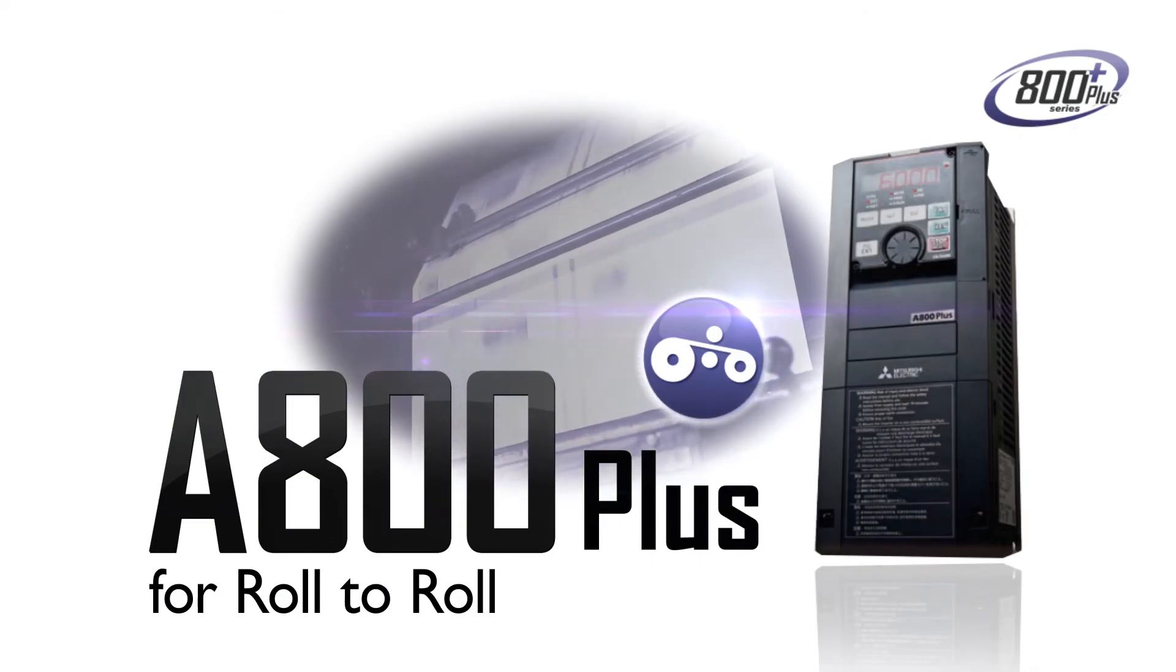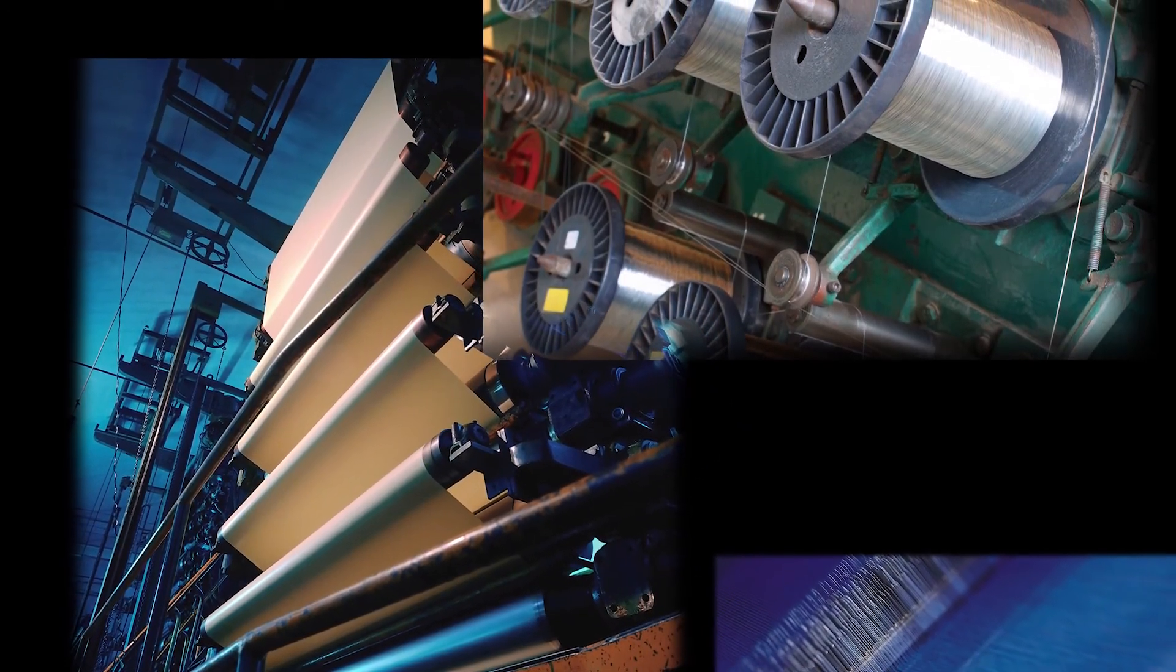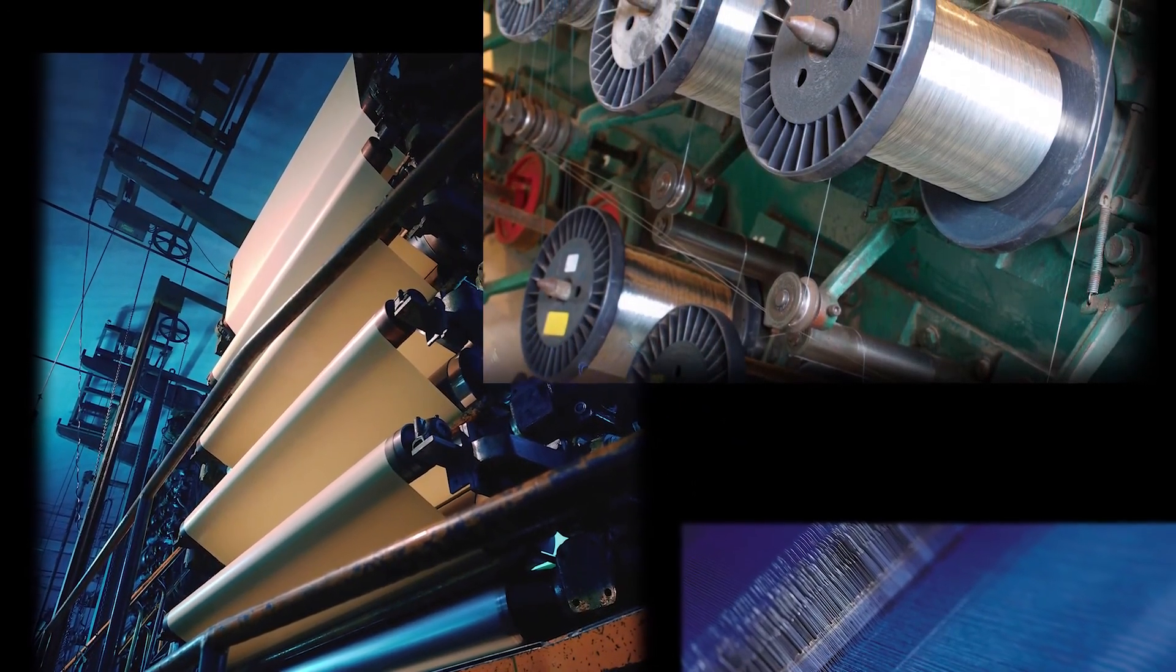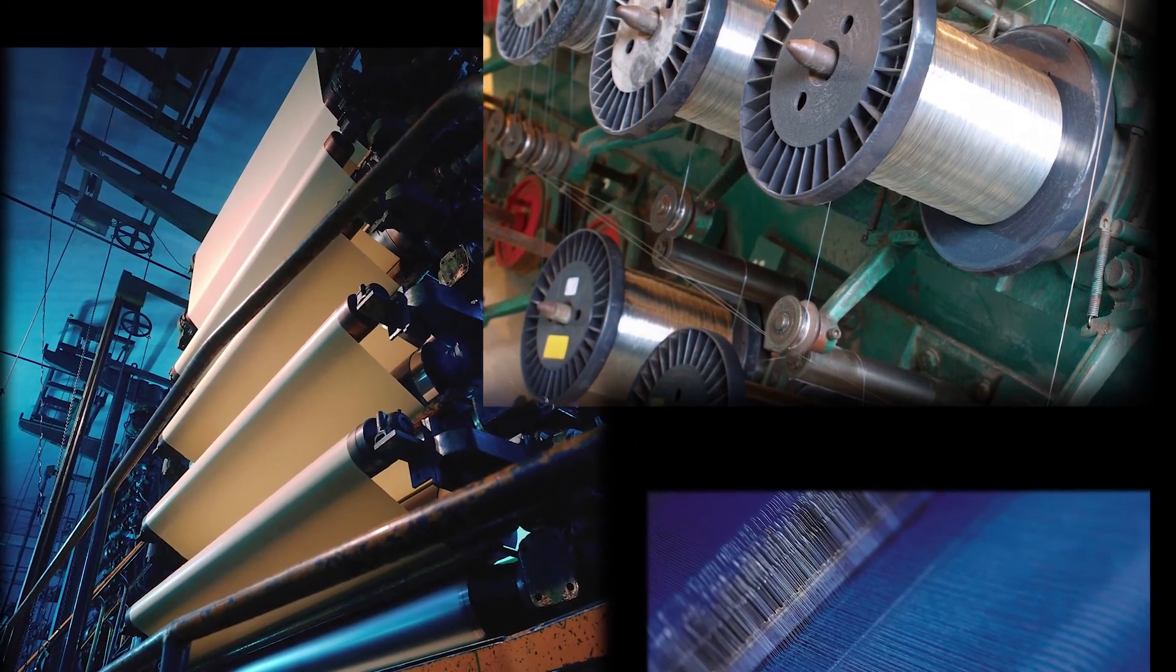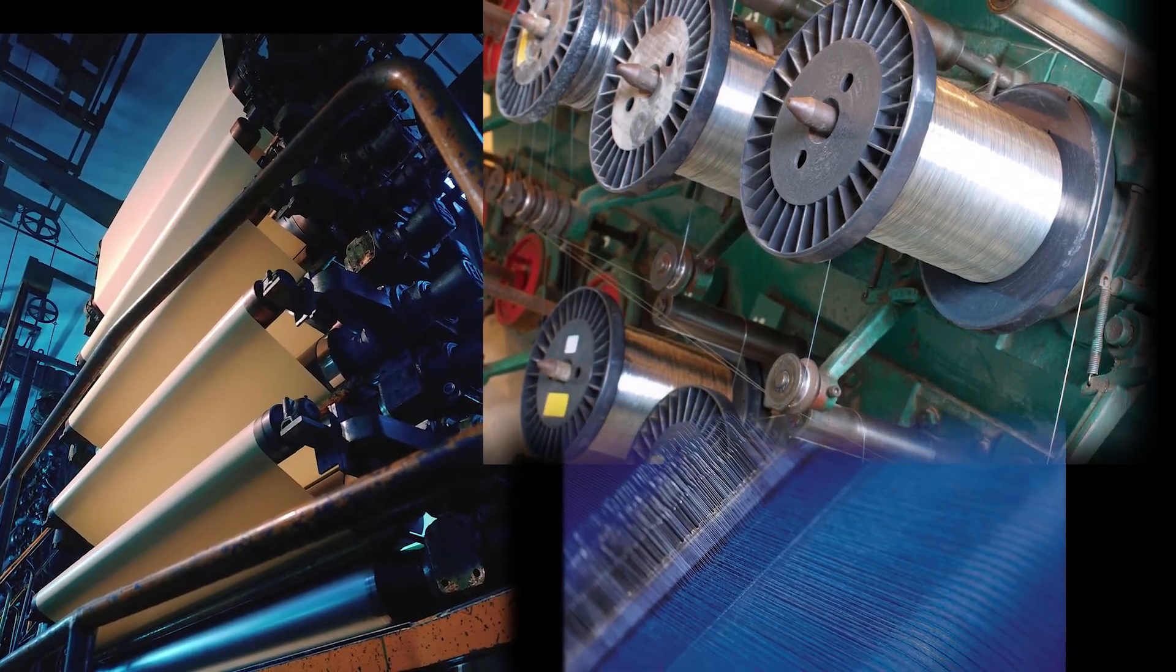The Mitsubishi Electric FRA800 Roll-to-Roll Inverter has functions perfectly suited for winding and unwinding and it can also increase the productivity of a wide variety of systems incorporating wire drawing machines and printers.